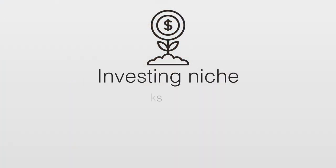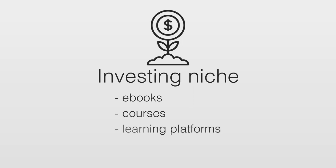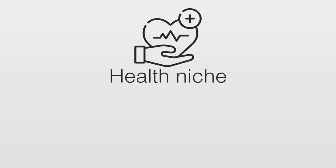Depending on your niche, you can promote different affiliate offers. If you're in the investing or business niche, you can promote make-money products, eBooks, courses, or learning platforms on platforms like JVZoo, WarriorPlus, or Digistore. If you're in the health niche, you can go to Clickbank and find eBooks on weight loss or better sleep, link them in your descriptions, and earn commissions when your audience buys.